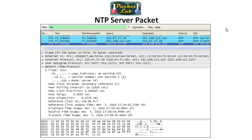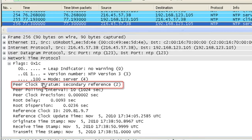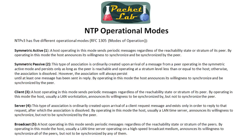Here's a server packet from the server side. You can see that while it was a stratum three server, its peer — where it's getting its time from — is a stratum two. NTP version 3 actually has five different operational modes, taken directly from RFC 1305 in the section on modes of operation. Only three of those five modes are used in Cisco's implementation.